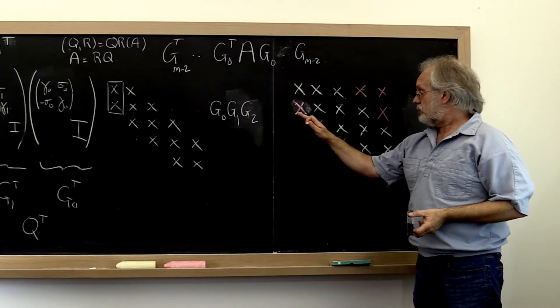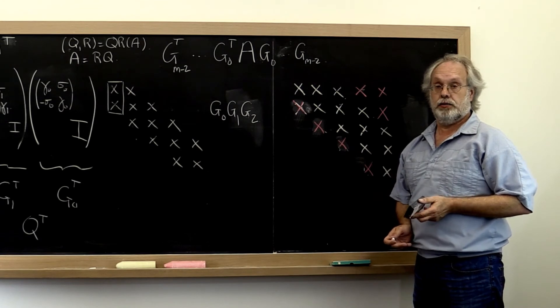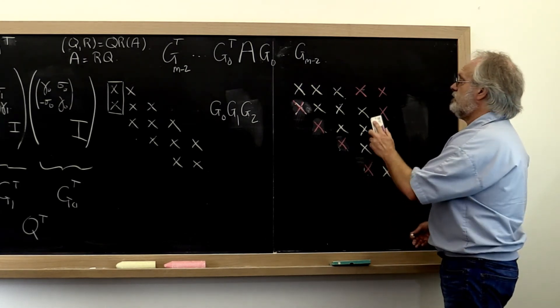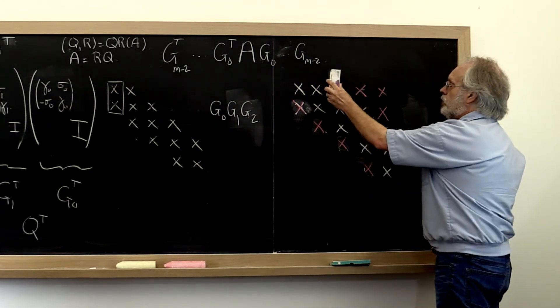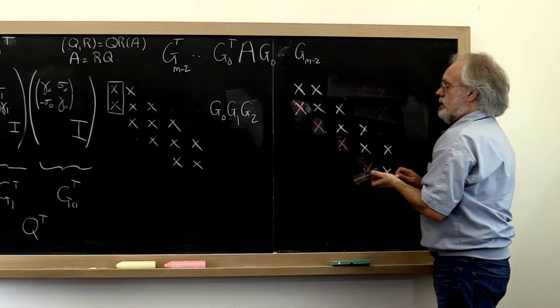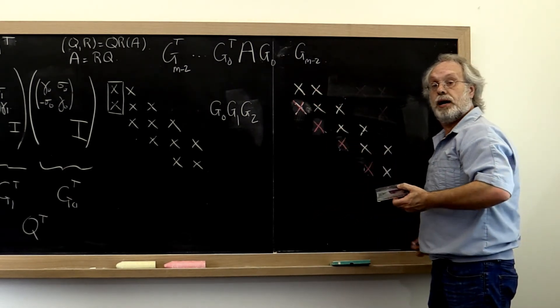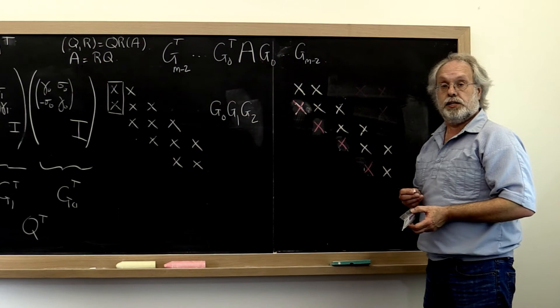And we know that the resulting matrix has all of these zeros below the first subdiagonal. So through that observation, we actually know that all of these entries here must be equal to zero, because we must get back a tridiagonal matrix.